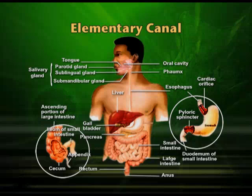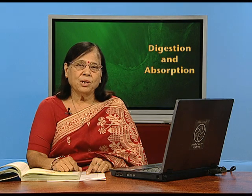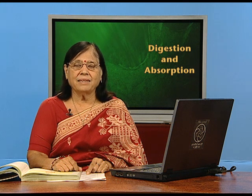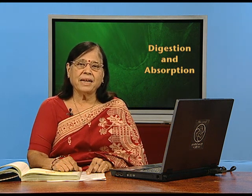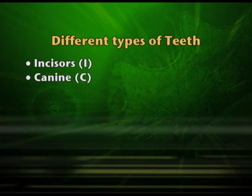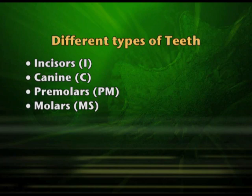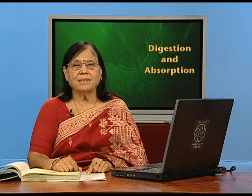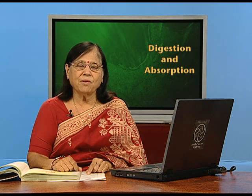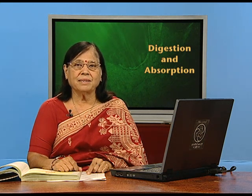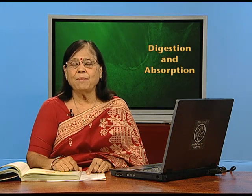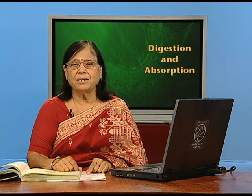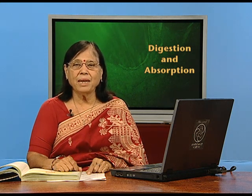Beginning with the mouth, which is the first part of our alimentary canal or gastrointestinal tract (GIT): in the mouth you have teeth, tongue, and salivary glands. Teeth are of four types — incisors, canine, premolars, and molars. The tongue rolls food between the teeth. On the tongue there are many papillae, and some of them bear taste buds. That is why when you eat anything you are able to appreciate whether it is sweet, bitter, or sour — different areas on the tongue identify different tastes.